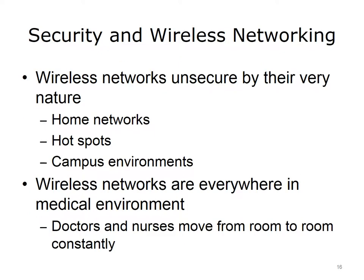Let's move on to security and wireless networking. Wireless networks are unsecure by their very nature — they're open, allowing anybody to connect. Wireless networks include homes, airports, coffee shops, hotels, citywide wireless access points (WAPs), college campus environments, and hospitals. Wireless networks are ubiquitous in medical environments; doctors and nurses tend to move from room to room constantly using wireless handheld devices.